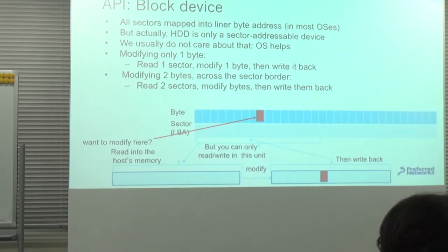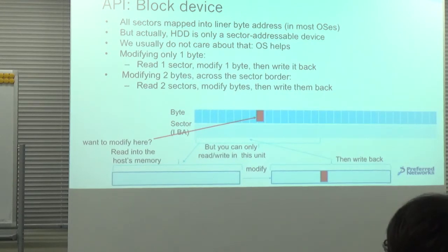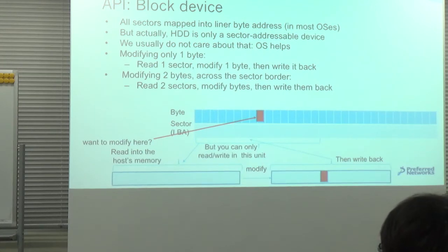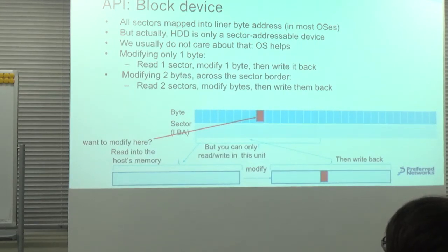But actually, the hard disk is a block device — you cannot read or write only one byte. Usually users don't care about that restriction because it's hidden. If you're going to modify only one byte, the OS reads the whole sector from the hard disk, modifies that byte, then writes the whole sector back. This is called a block device.